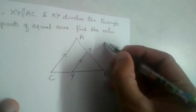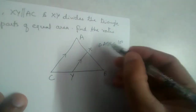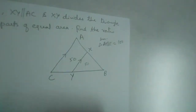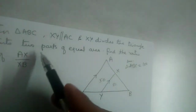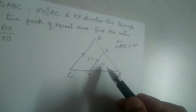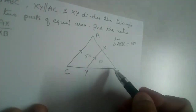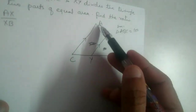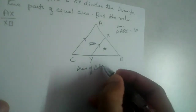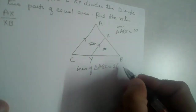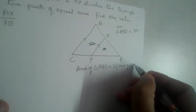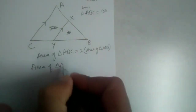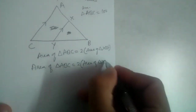For example, if the area of triangle ABC is 100, this part will be 50 and this part will be 50, because XY is dividing the area into two equal parts. So if the area of the smaller triangle is 50, area of the bigger triangle will be 100. We can say area of triangle ABC is two times area of the smaller triangle XBY.